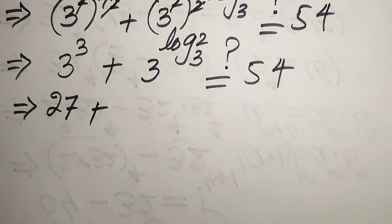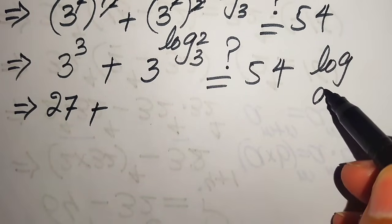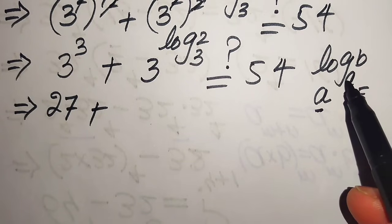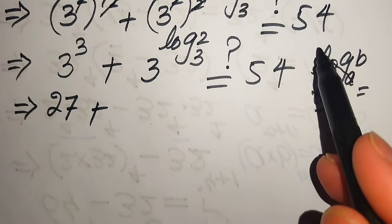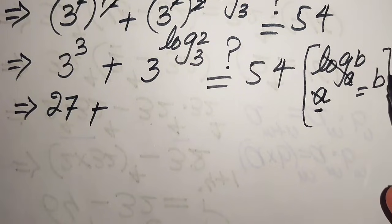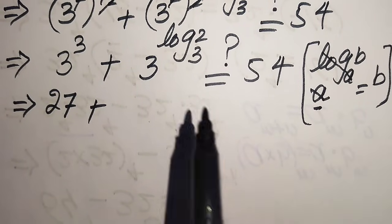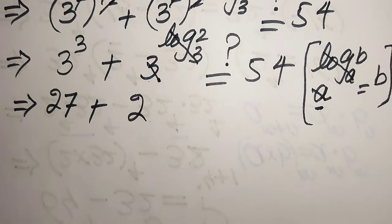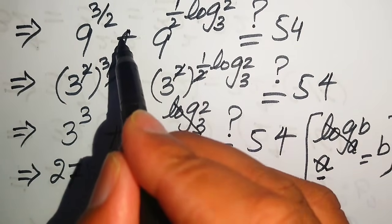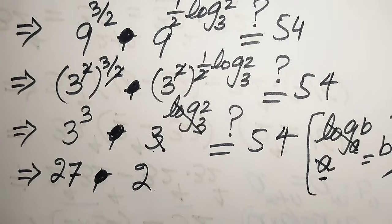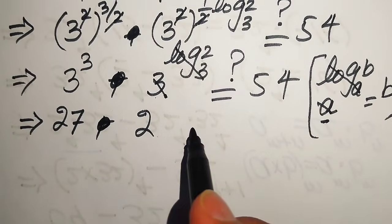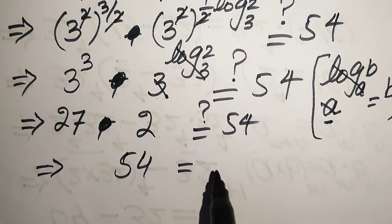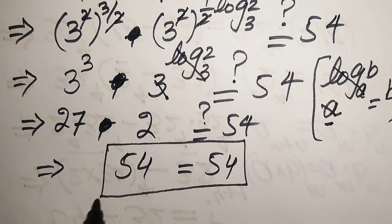We apply the property: a to the power of log base a of b equals b. Since the base 3 and the log base 3 cancel, 3 to the power of log base 3 of 2 equals 2. Note this is a multiplication sign, not addition, from the exponent expansion. So we have 27 times 2, which equals 54, confirming that the value of m satisfies the given equation.